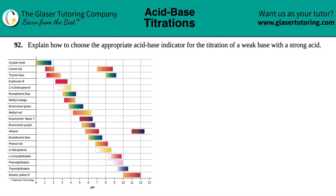Question 92: explain how to choose the appropriate acid-base indicator for the titration of a weak base with a strong acid. This is a theoretical question, so no math involved.